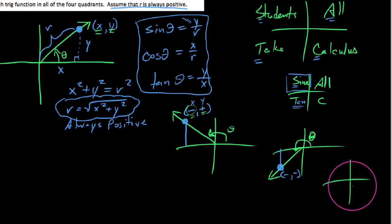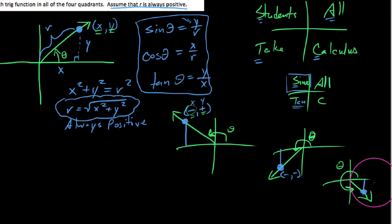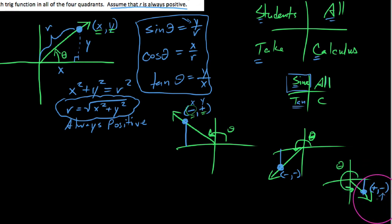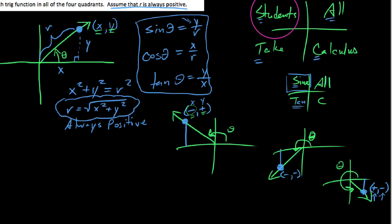Last but not least, if an angle terminates in quadrant IV, 'C' means cosine is the only positive trig function. The point in quadrant IV has a positive x value but a negative y value. Sine would be negative since we have a negative y. Cosine is the only positive one here. Tangent is y over x — a negative divided by a positive — which is also negative.